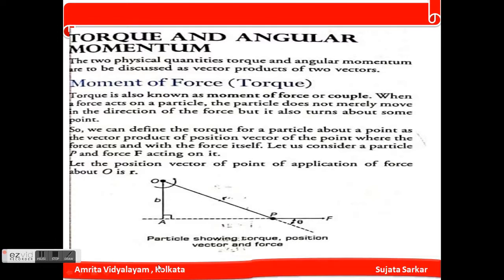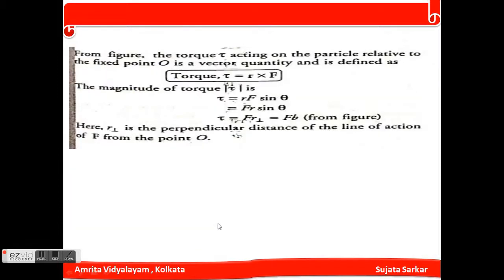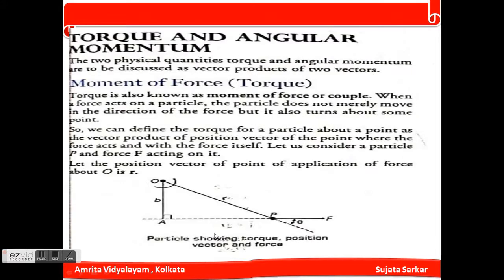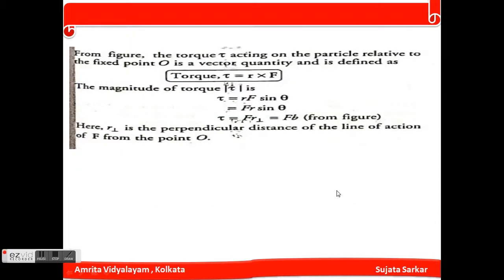According to the figure, O is the point and r is a position vector. We can write that torque τ equals r cross F. The magnitude of torque can be written as τ equals rF sinθ, where rF sinθ means r-perpendicular, which is the perpendicular distance of the line of action of F from the point O.